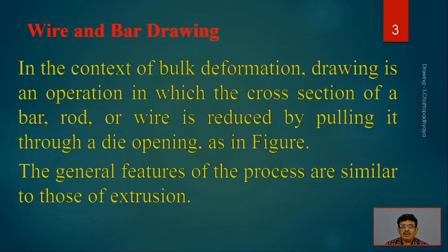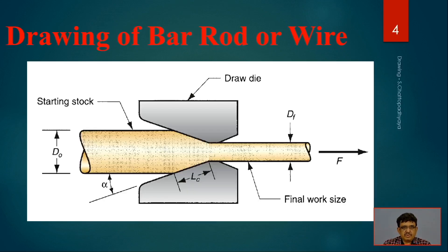In most cases a drop coiler or coiler is responsible for pulling the material. Sometimes after the wire drawing machine, the product passes through a set of rollers called straighteners so that any waviness is removed. One can see the schematic diagram of the wire drawing process — this is a representative sketch of the wire drawing process.